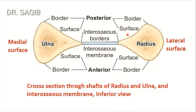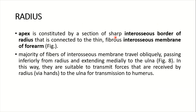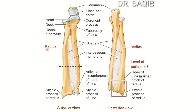There are various surfaces and borders of the radius: the posterior border, posterior surface, anterior border, anterior surface, and the interosseous border of the radius. The apex is constituted by a section of the sharp interosseous border of the radius connected to the thin fibrous interosseous membrane of the forearm. Here you can see the interosseous membrane, the interosseous border of the radius, the interosseous border of the ulna, and the interosseous membrane running from the radius to the ulna.